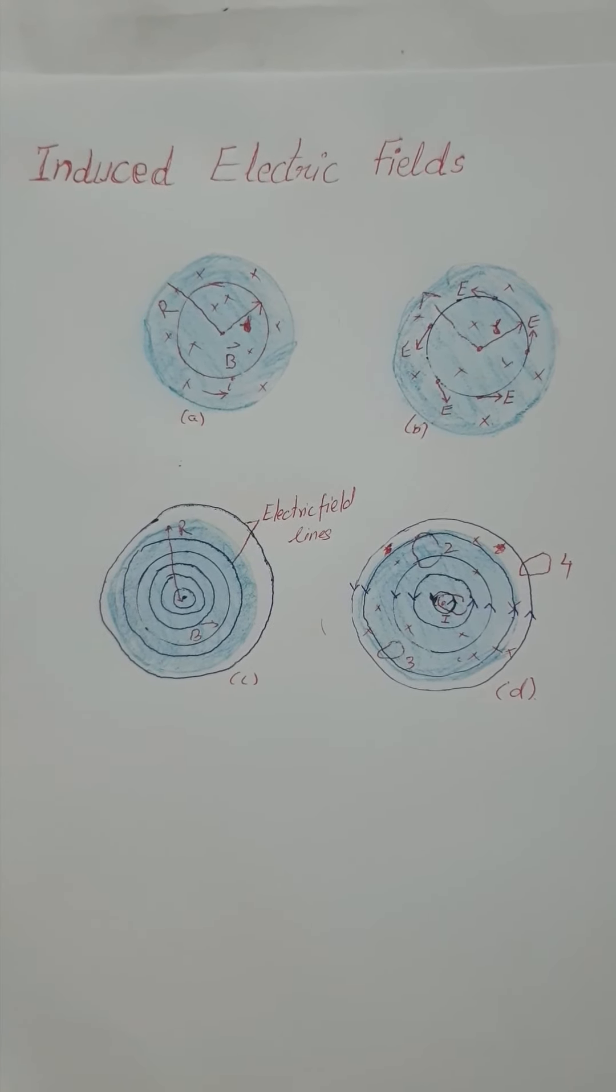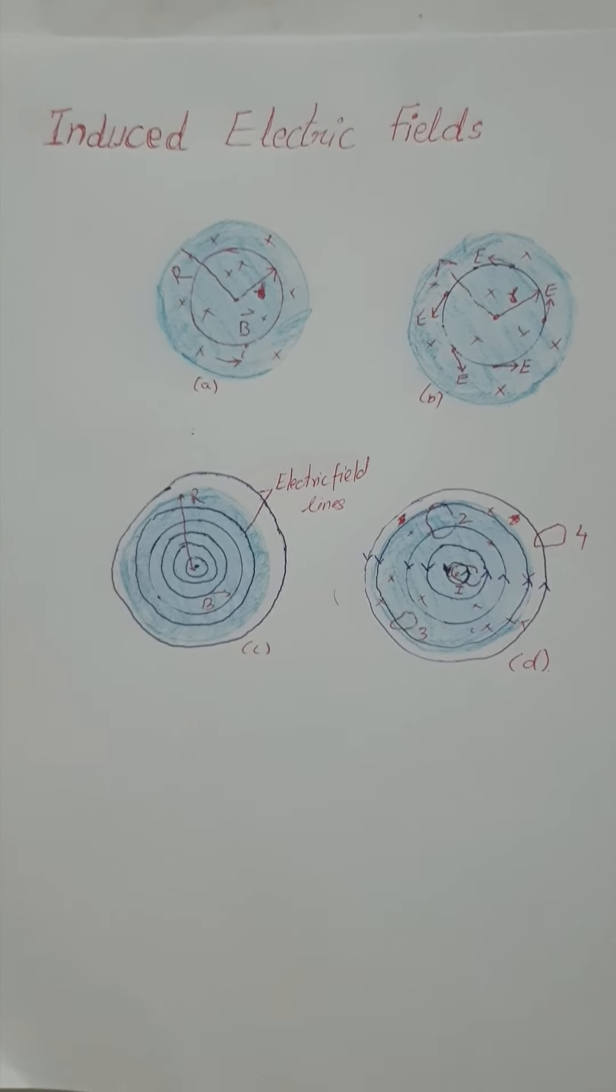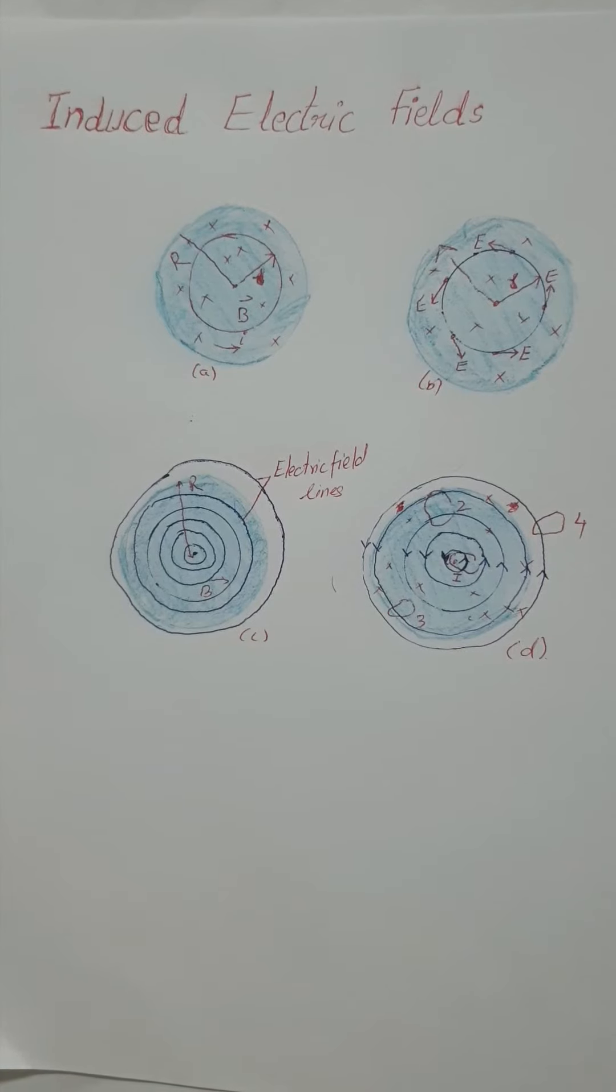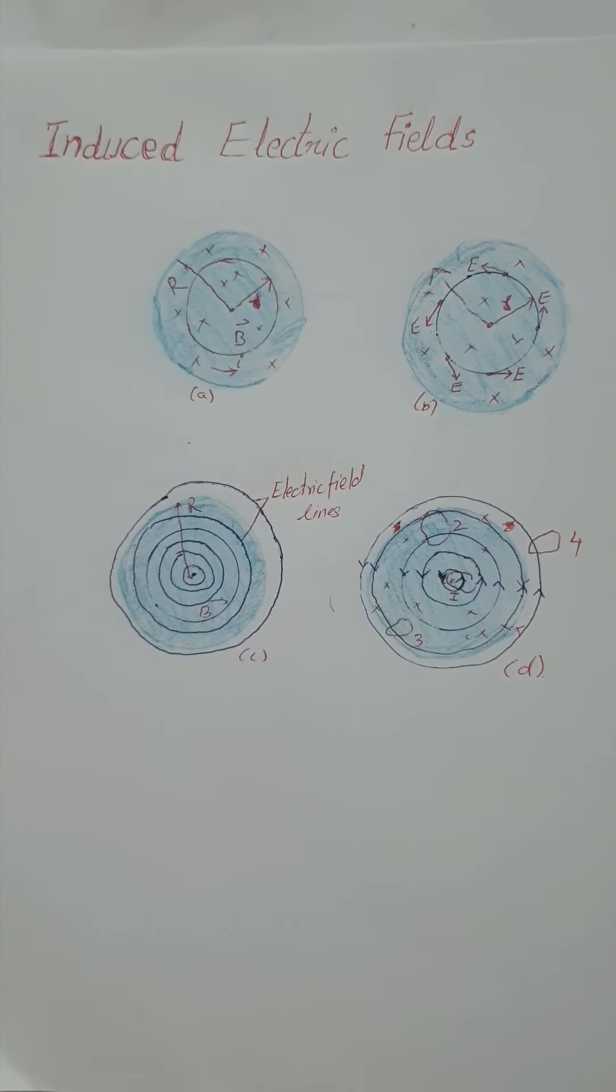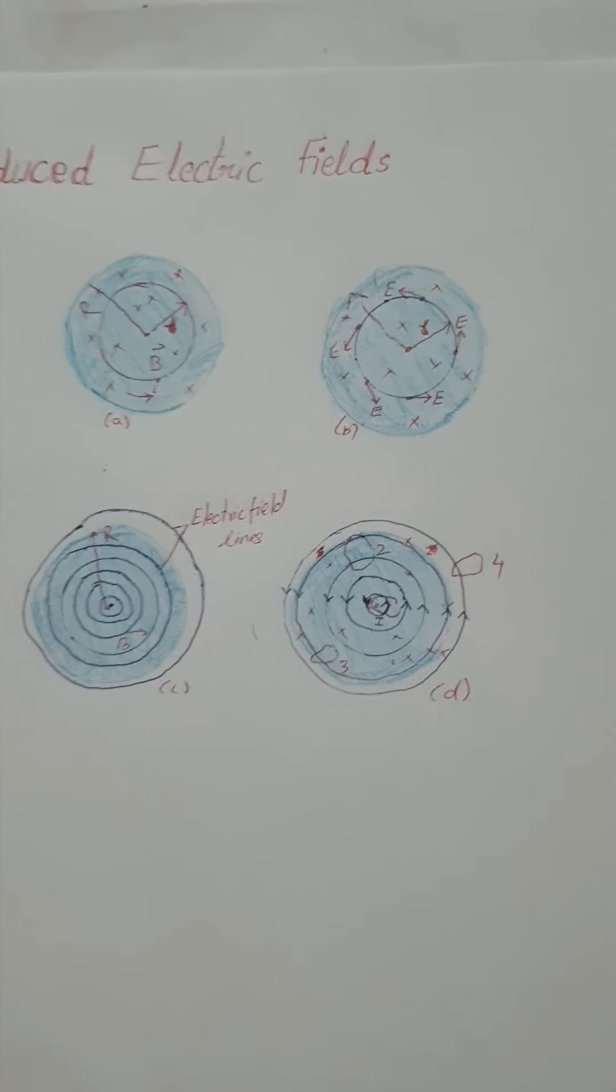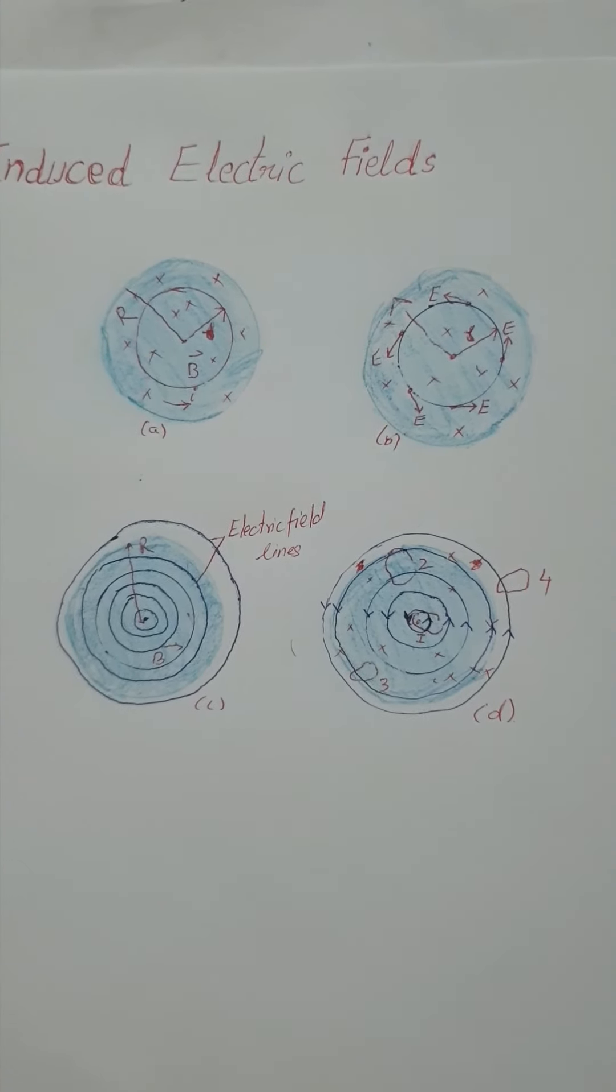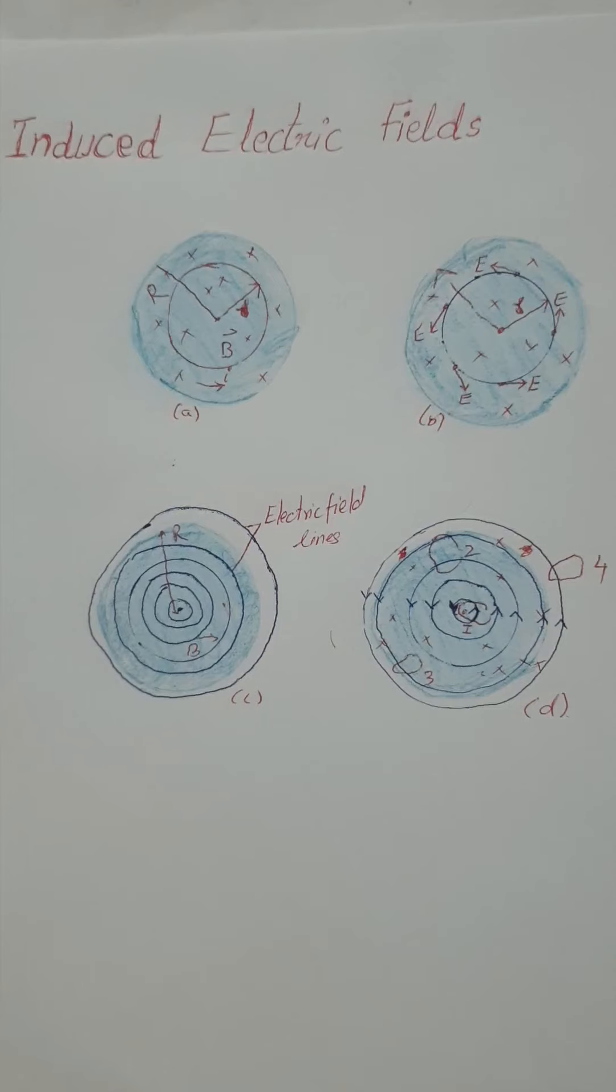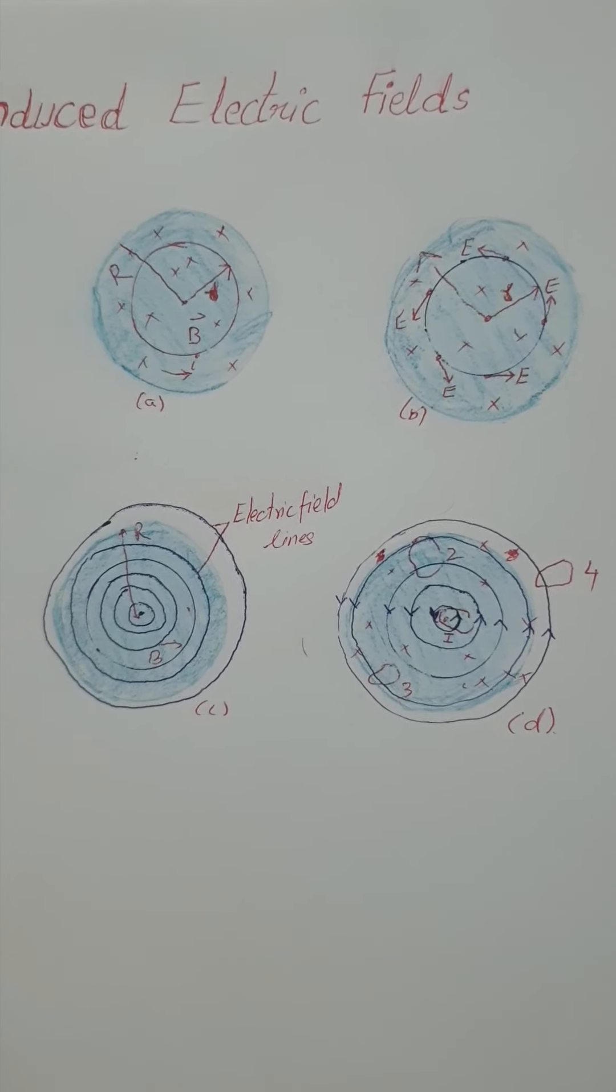If the magnetic field is decreasing with time at a constant rate, the electric lines will still be concentric circles, but now they will have the opposite directions. For example, if it is previously this direction, then it becomes opposite when we decrease the magnetic field. So a change in magnetic field produces an electric field.